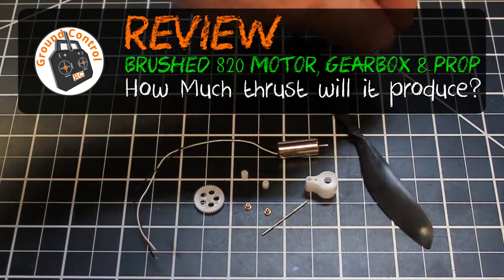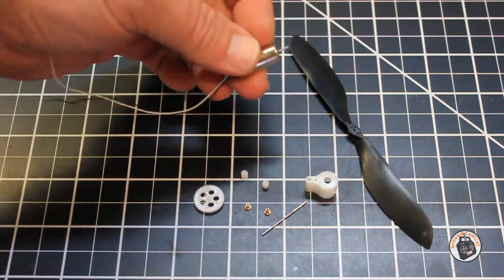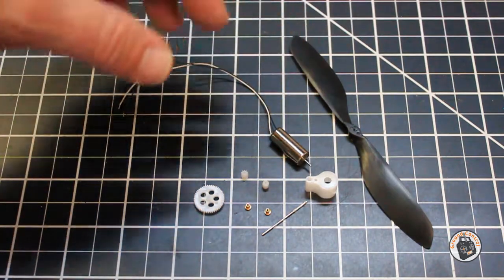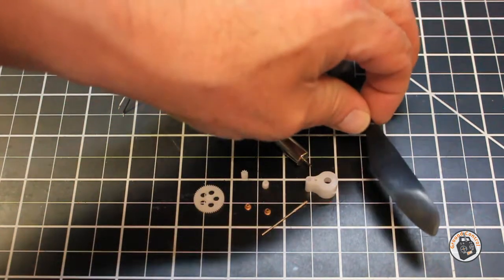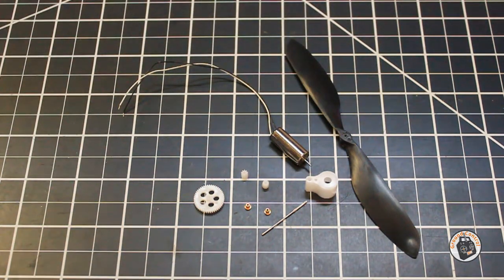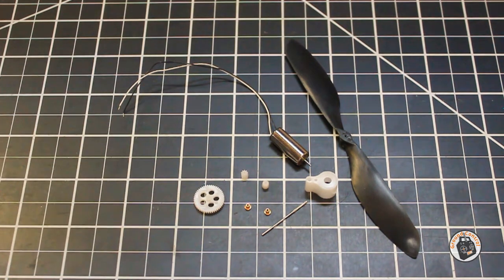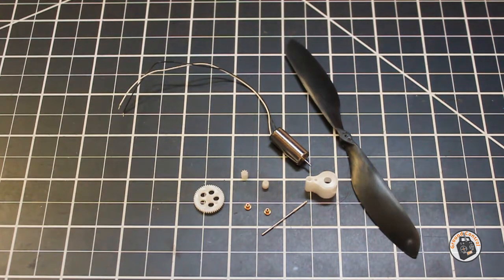Welcome to Ground Control. We are reviewing an 80-20 motor with a gearbox and prop brush system. I ordered one of these just to put it together to see what kind of thrust you could get out of it.